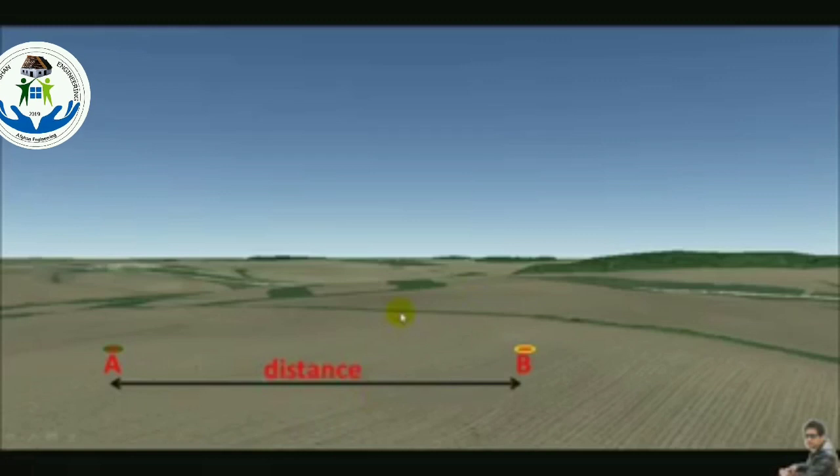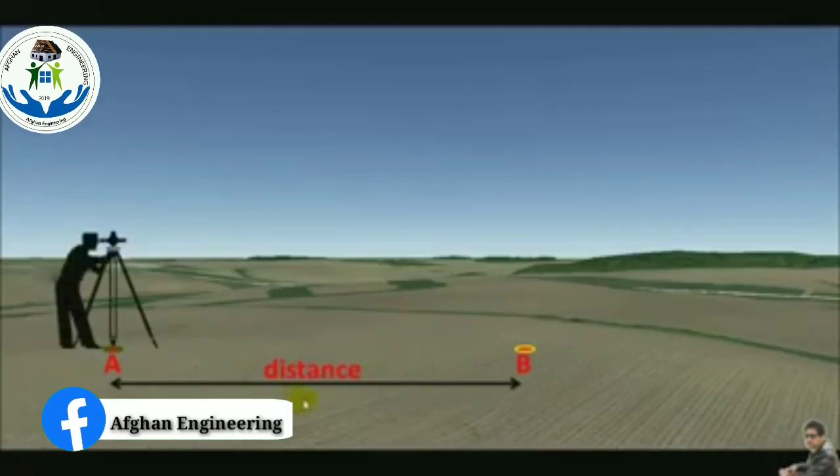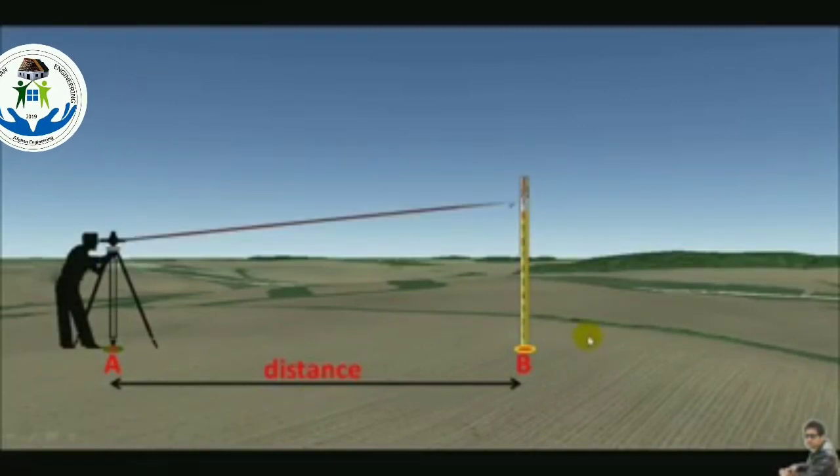To find the distance, we just set the instrument at one of these points and the graduated staff at another point. Also, we need the upper hair and lower hair readings.